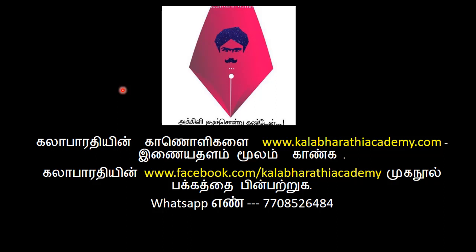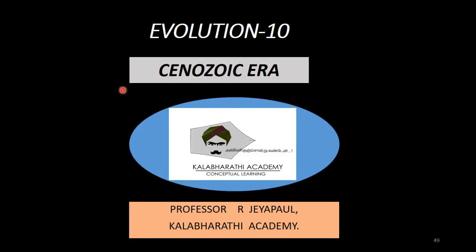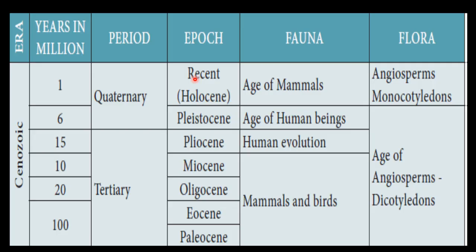Now we will see the recent era, that is called the Cenozoic era. This is the recent era where there is a continuation of the evolutionary process. The Cenozoic era is the one that is from 100 million years ago up to date.